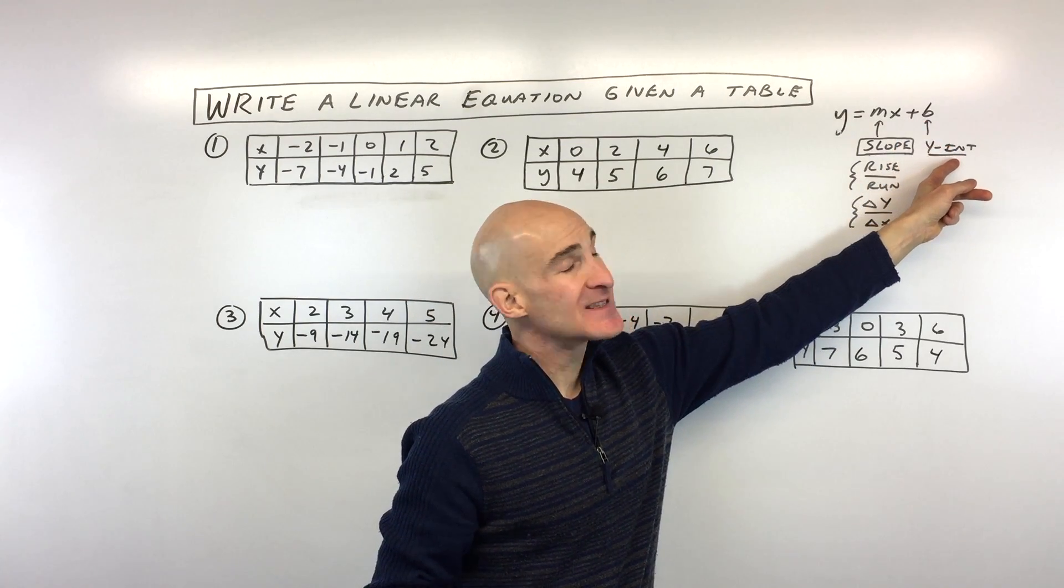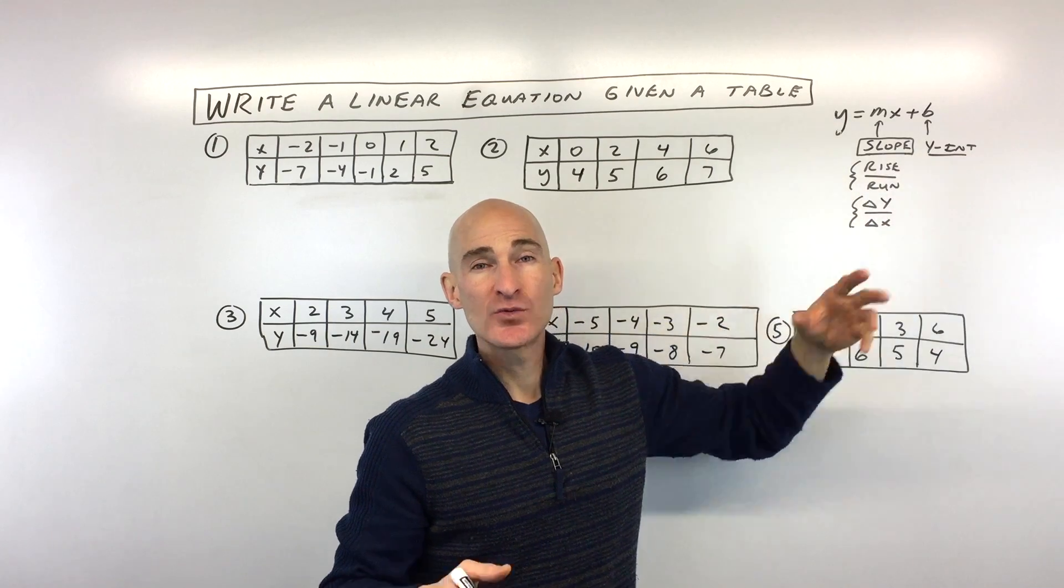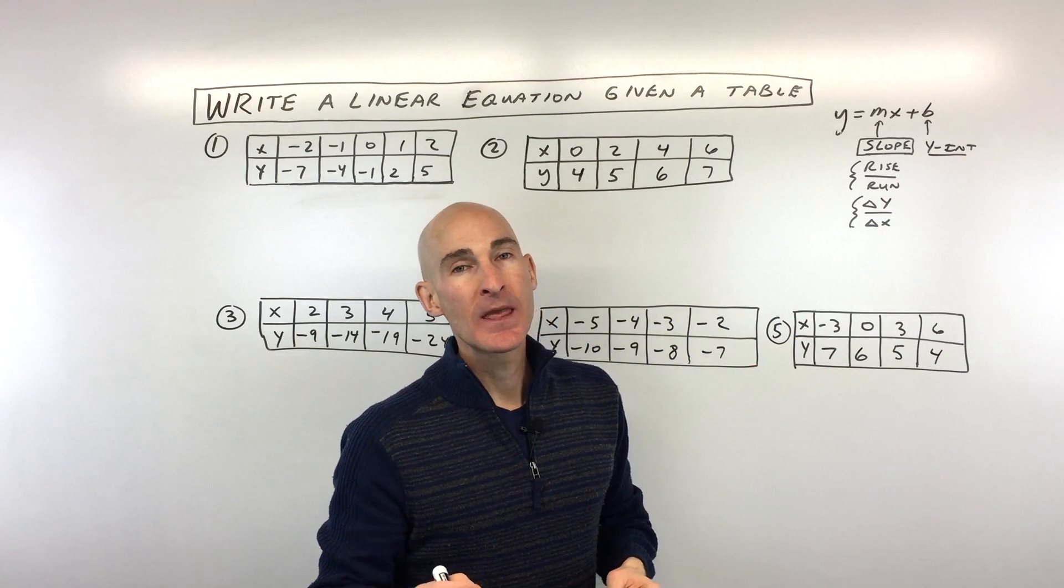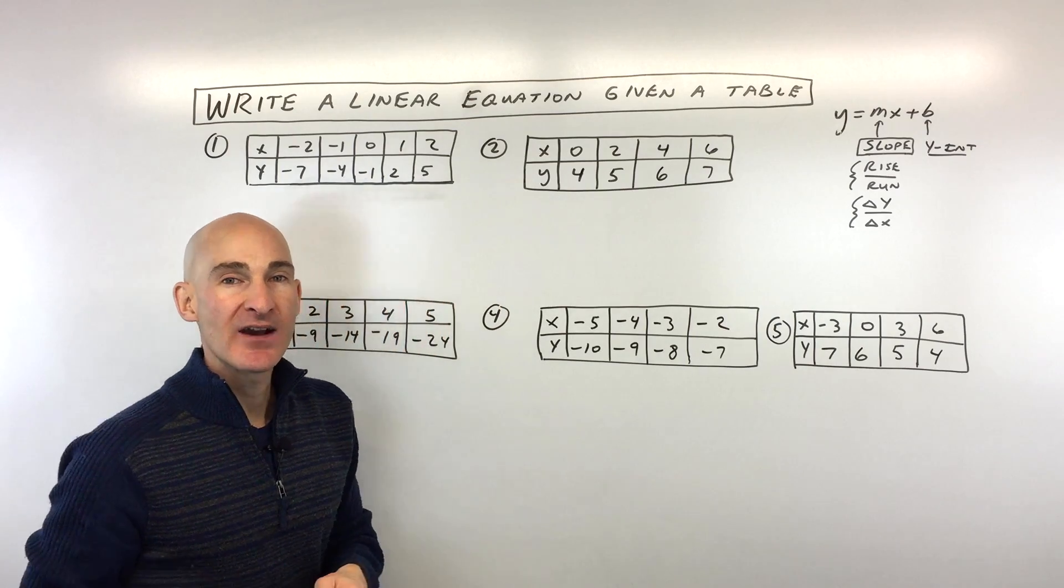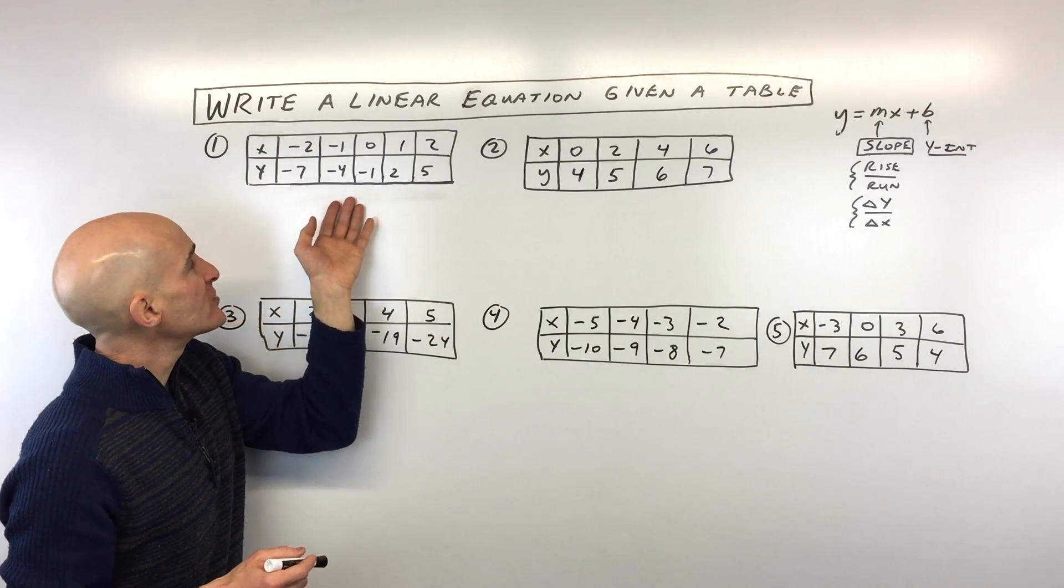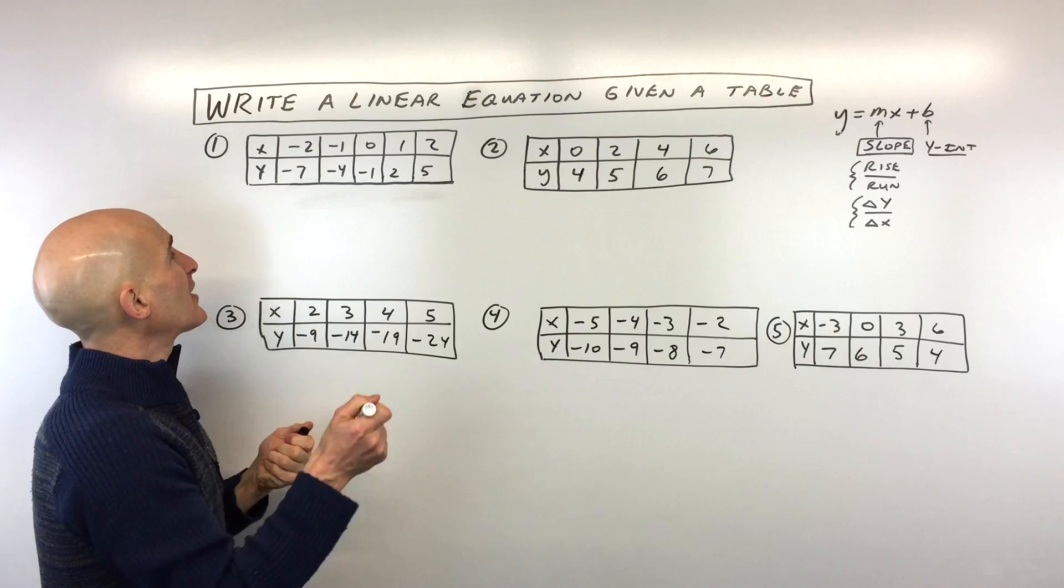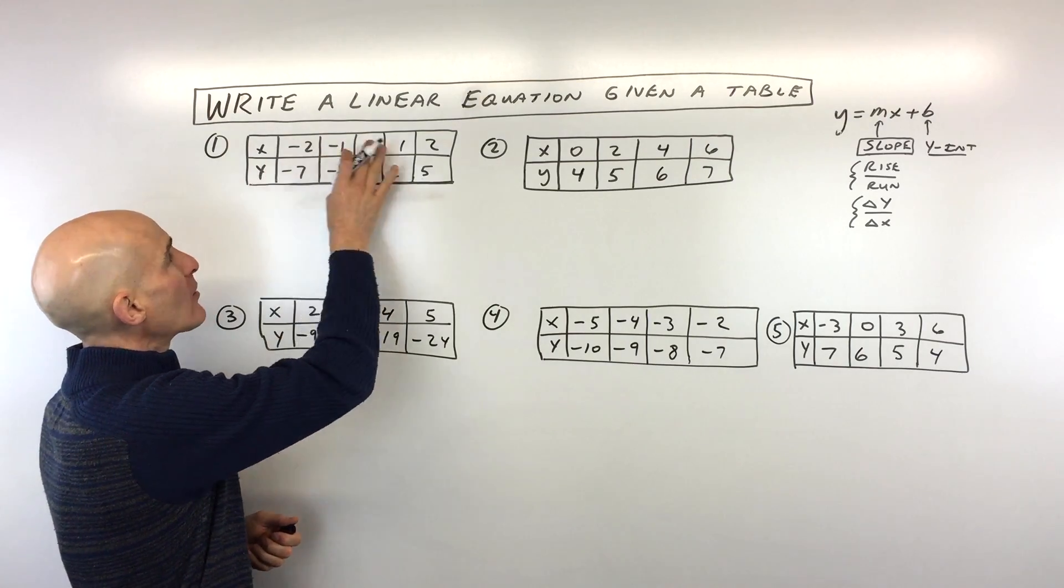Whereas the y-intercept, that's the initial condition. That's where it crosses the y-axis. That's when x is zero. So we'll do some examples, and you'll get a hang of how this works. So first example here, what you want to look at is how are the y's changing and how are the x's changing.